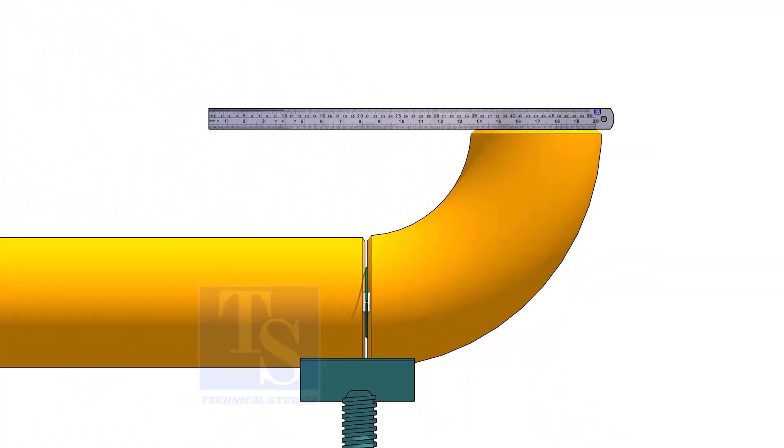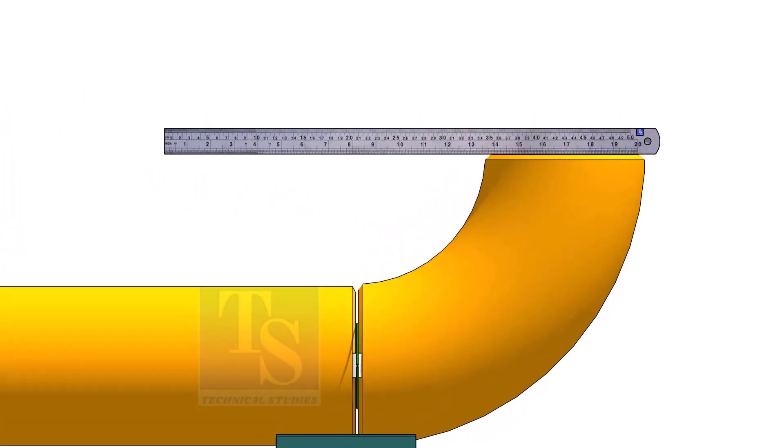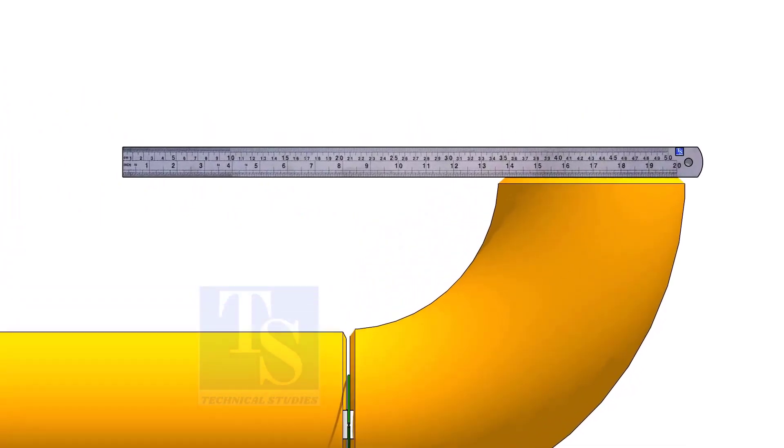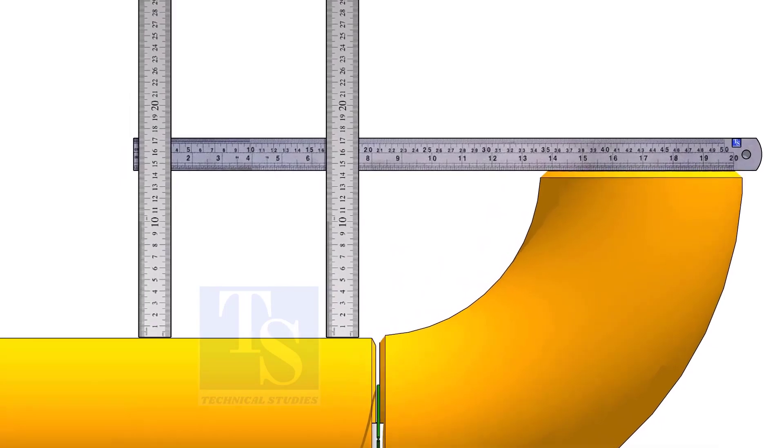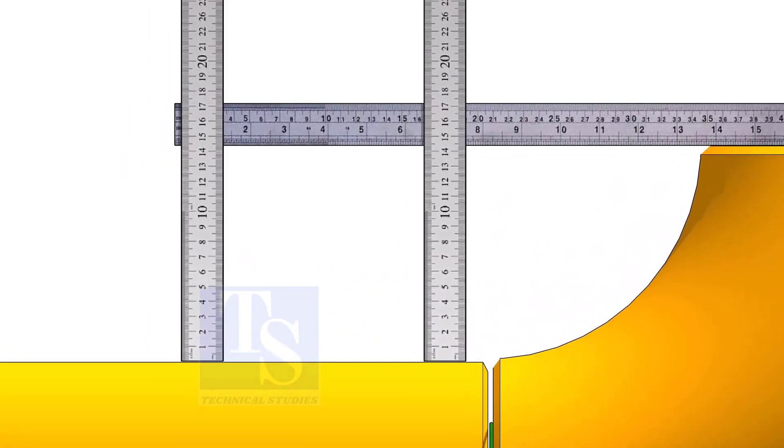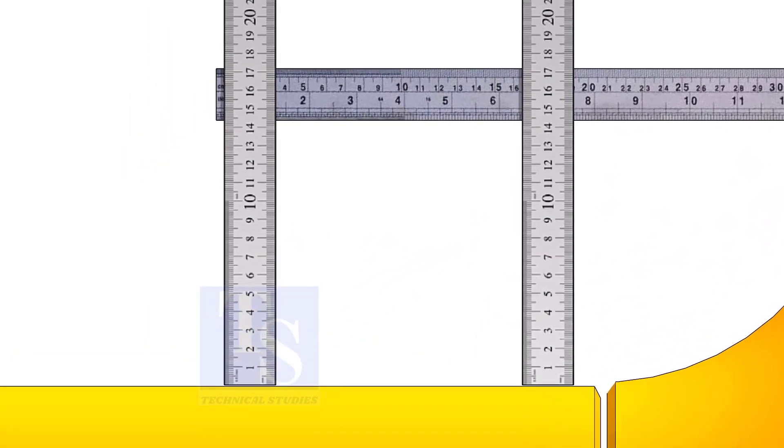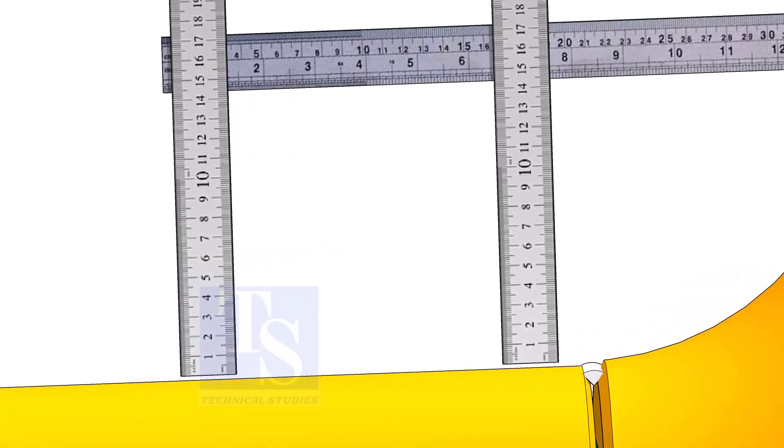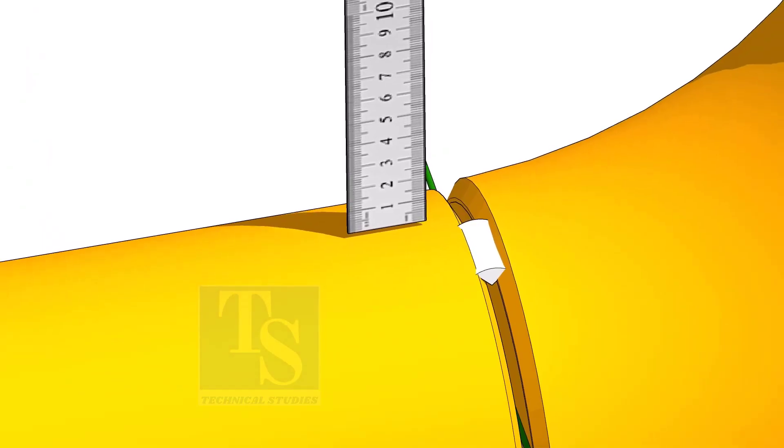Hold a scale on the top of the elbow and measure the distance. Tack weld on the top and bottom side of the joint.